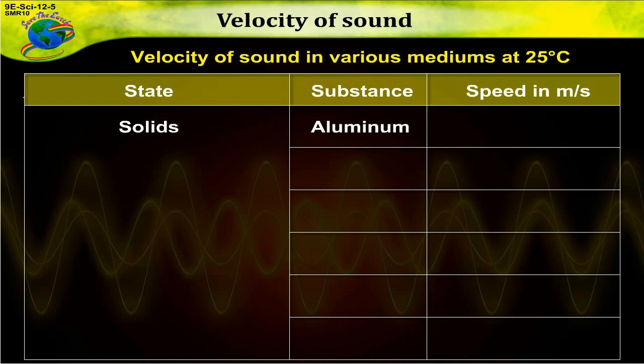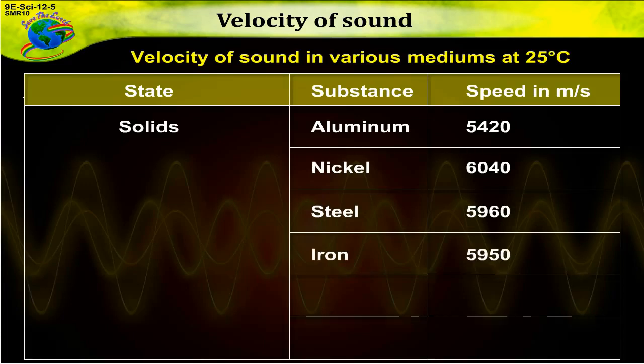Aluminum, speed is 5420. Nickel, 6040. Steel, 5960. Iron, 5950. Brass, 4700. Glass, 3980.